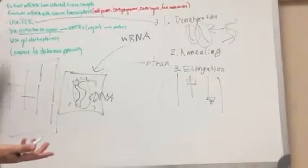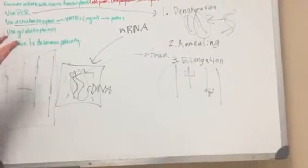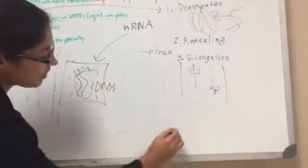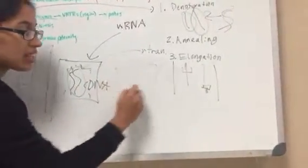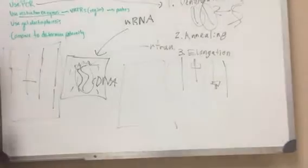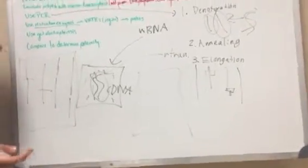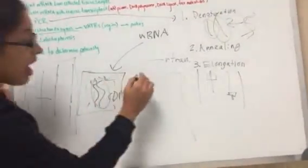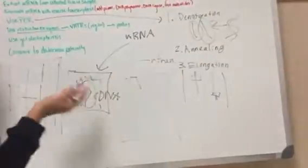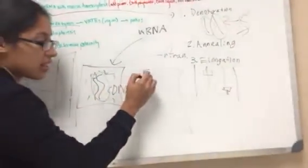So then you have basically the gel, the agarose gel, which is used for DNA electrophoresis. And then you're going to have those little wells that are going to contain the VNTRs, which are the DNA samples.